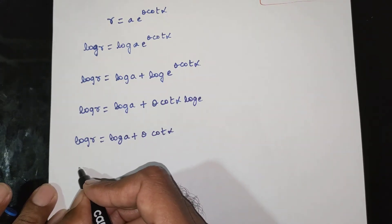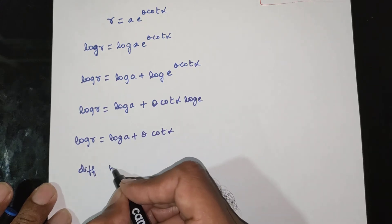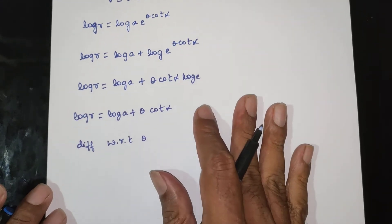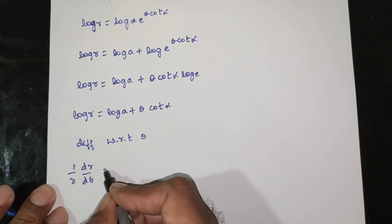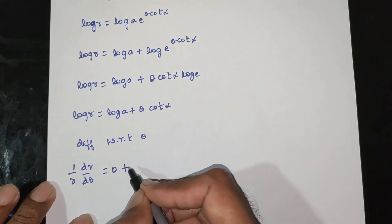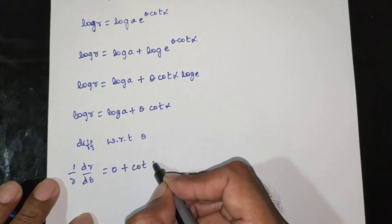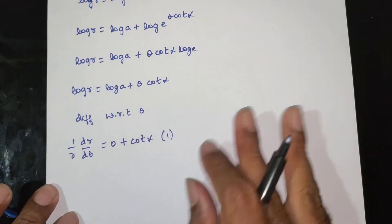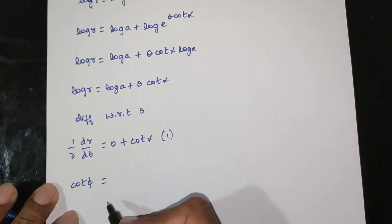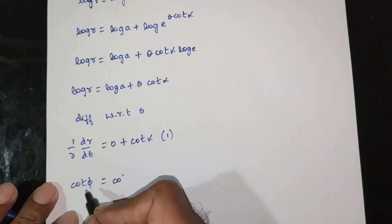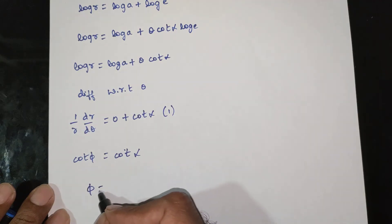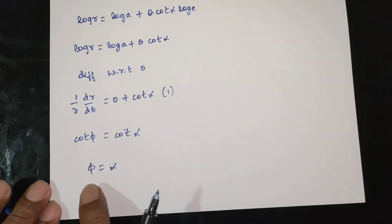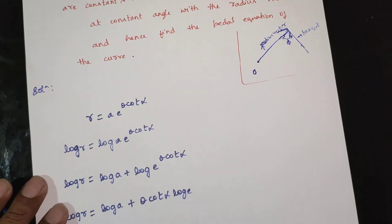Differentiating with respect to theta: 1/r · dr/dθ equals cot alpha. Therefore cot phi equals cot alpha, and therefore phi is equal to alpha. Hence the angle between the radius vector and the tangent is alpha, where alpha is a constant — a constant angle.